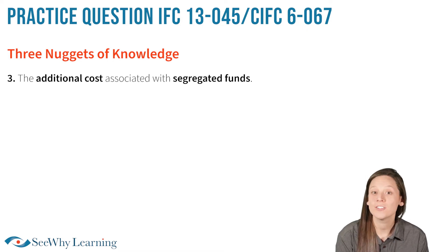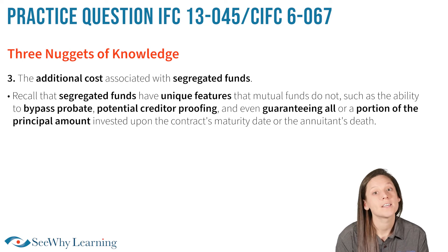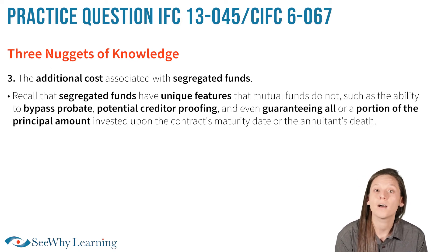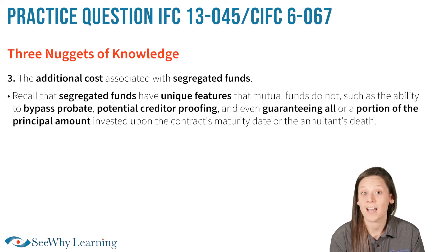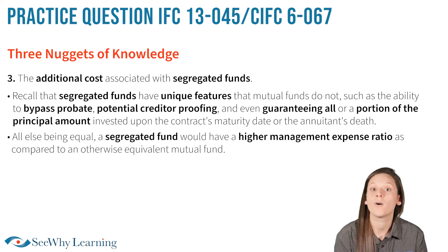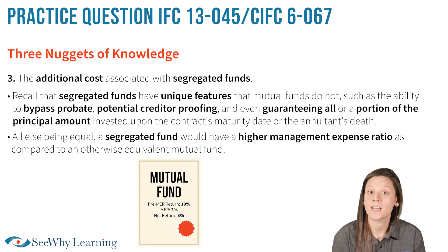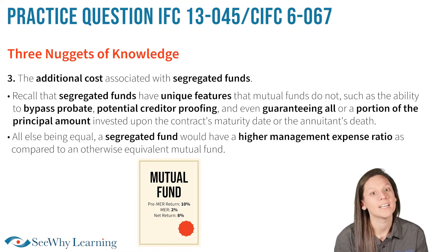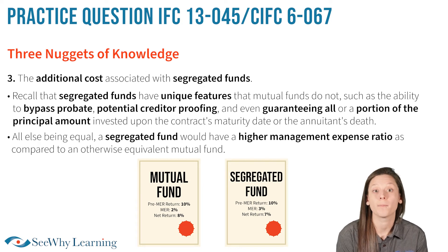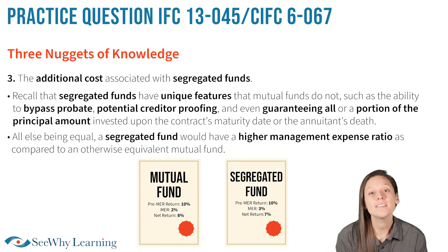Nugget number three is the additional costs associated with segregated funds. Segregated funds have unique features that mutual funds do not, such as the ability to bypass probate, potential creditor proofing, and even guaranteeing all or a portion of the principal amount invested upon the contract's maturity date or the annuitant's death. These guarantees do come at a cost though. All else being equal, a segregated fund would have a higher management expense ratio compared to an otherwise equivalent mutual fund. For example, if an equity mutual fund generated a pre-MER return of 10% and the MER is 2%, the net return is 8%. On the other hand, if an equity segregated fund generated a pre-MER return of 10% but had a higher MER of say 3%, the net return would only be 7%.